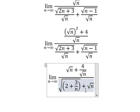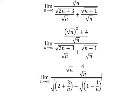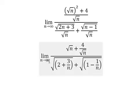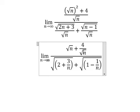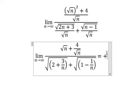Similarly for the second term. When n goes to positive infinity, 4 divided by infinity gives 0, 3 over n gives 0, and this term gives 0. So the denominator becomes the square root of 2 plus the square root of 1, meaning the whole expression goes to positive infinity divided by a finite denominator — that is, positive infinity.